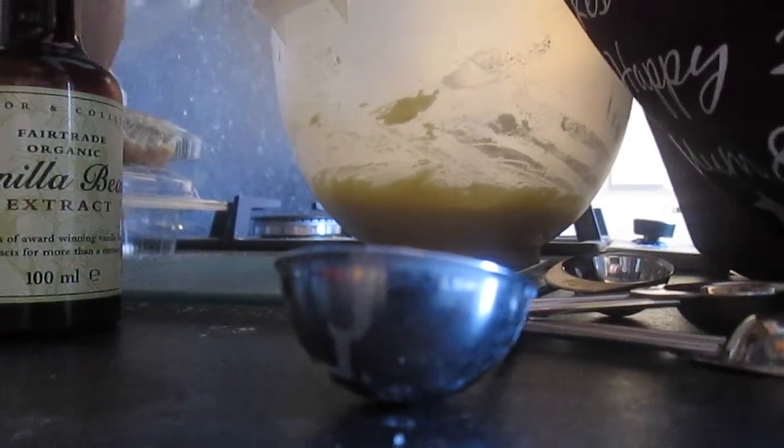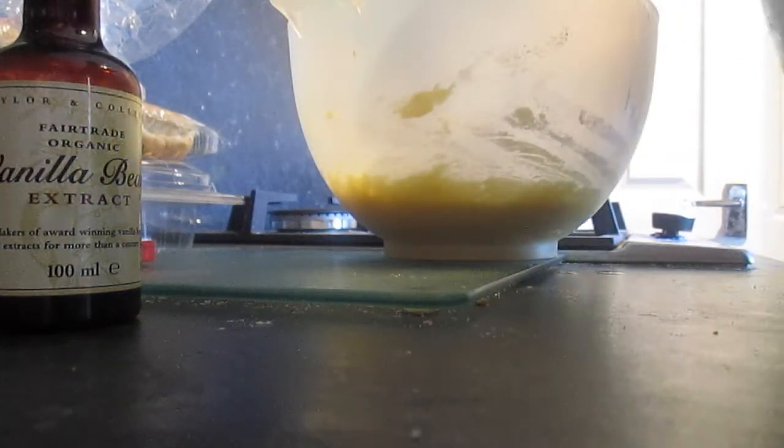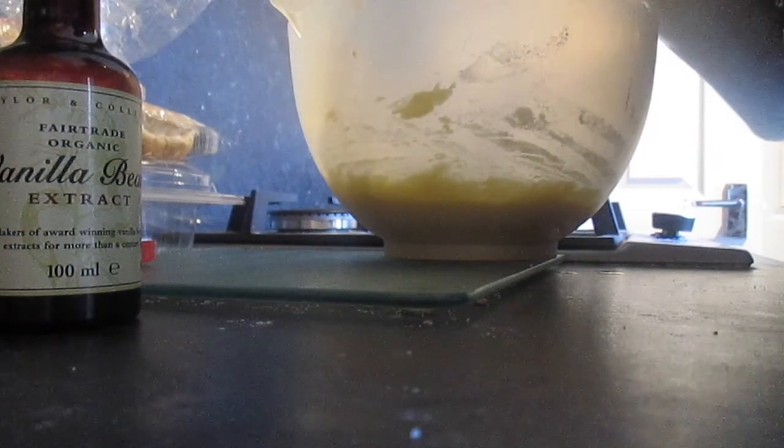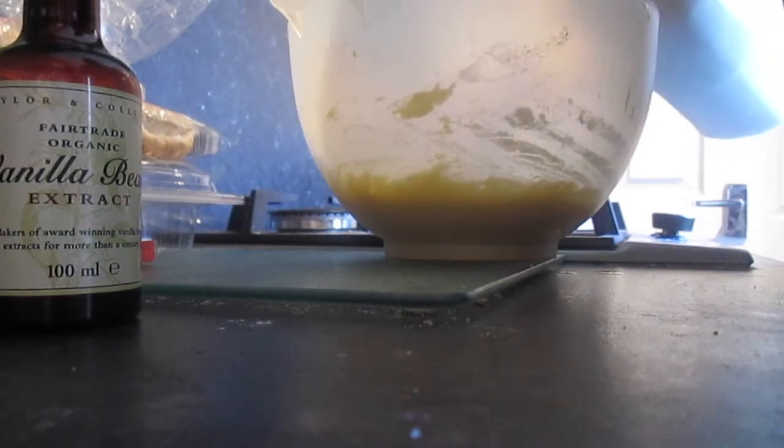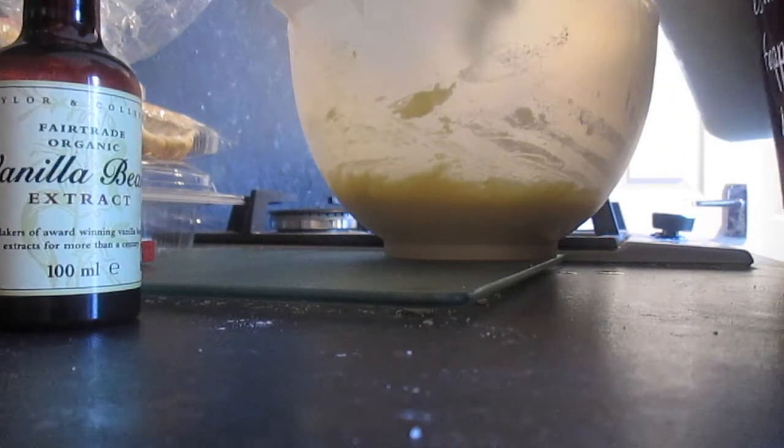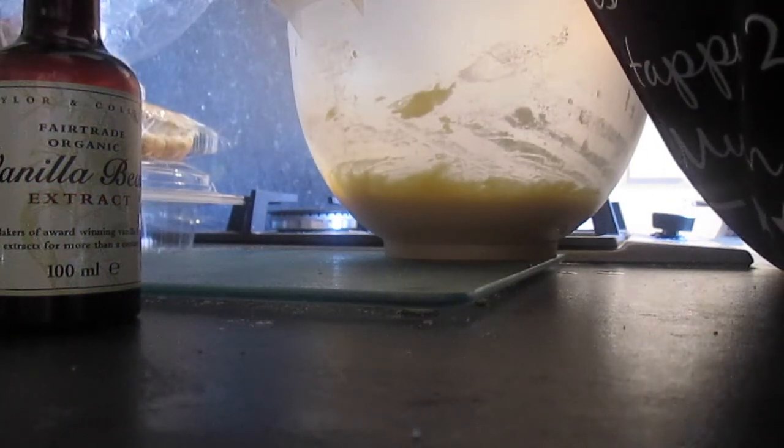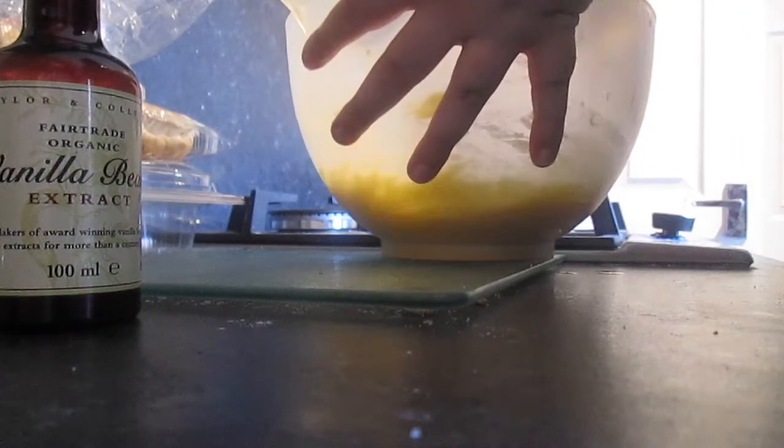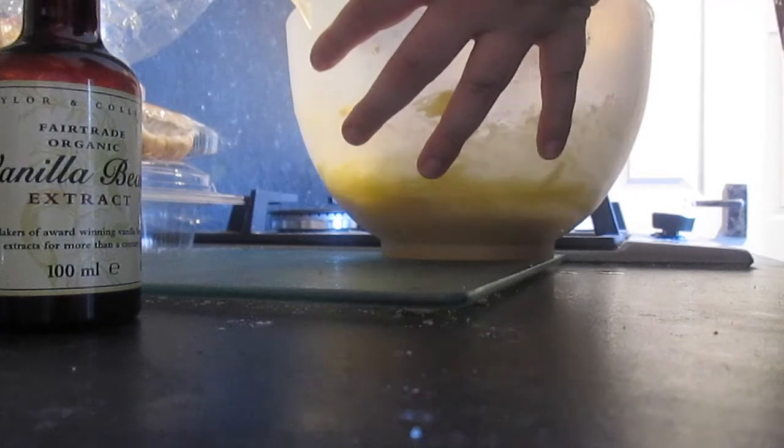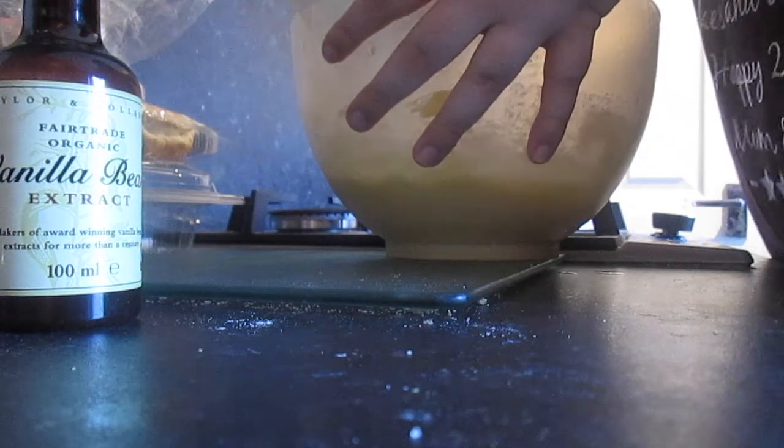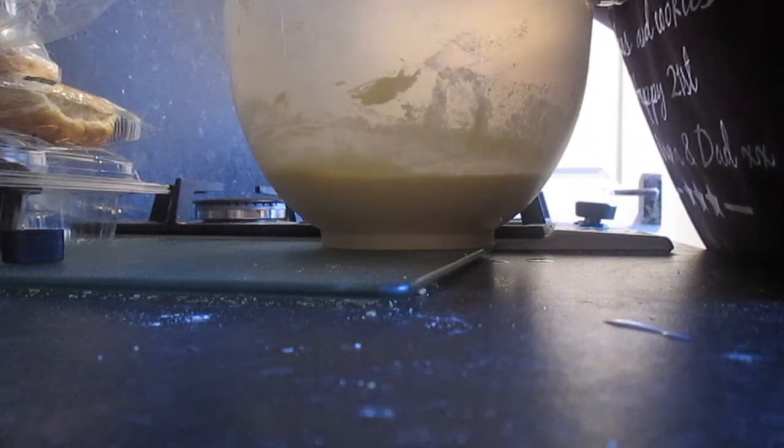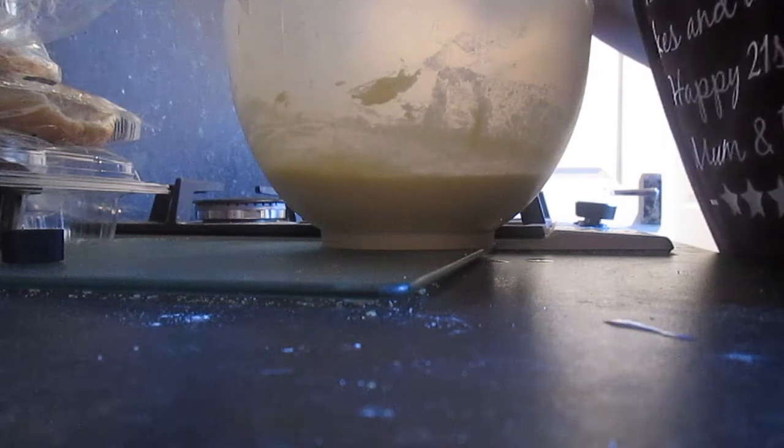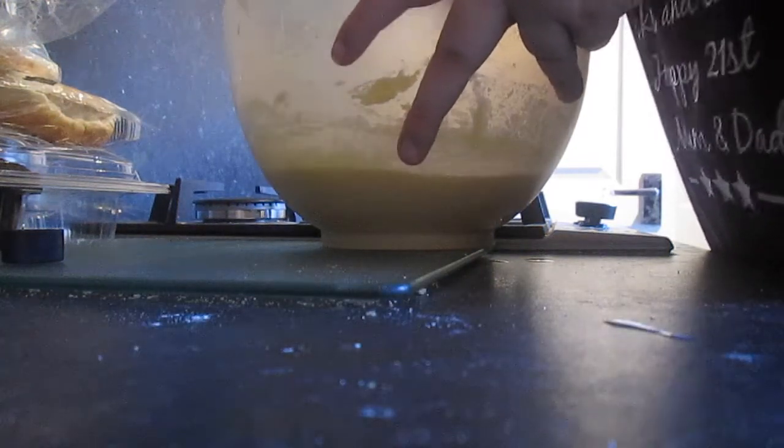And then the next thing you add is your three tablespoons of milk: one tablespoon in, two tablespoons in, three tablespoons in. And the last ingredient for the cupcakes is half a teaspoon of vanilla extract. So we're gonna put that in and then give it a stir, and then you go on to the next step.